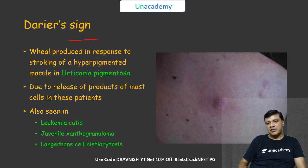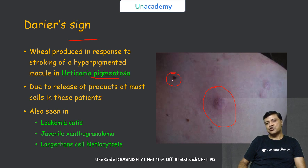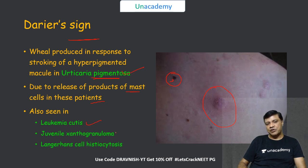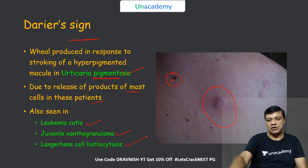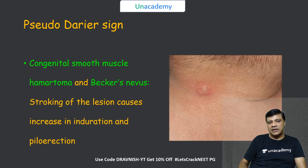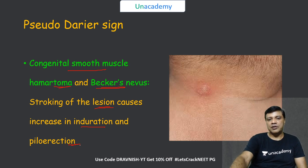The Darier sign is whealing induced by stroking the skin in a patient with urticaria pigmentosa. Stroking the hyperpigmented lesions causes histamine release from mast cells, producing whealing. It can also be seen in leukemia cutis, juvenile xanthogranuloma, and Langerhans cell histiocytosis. The pseudo-Darier sign is a feature of congenital smooth muscle hamartoma or Becker's nevus, where stroking produces induration and piloerection giving a feeling of swelling.